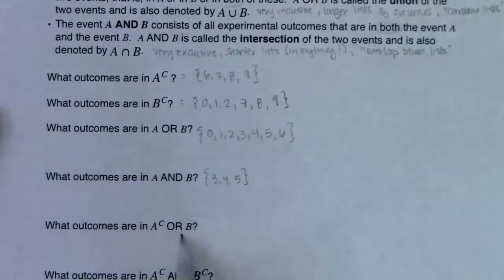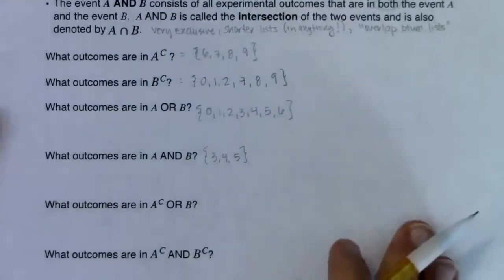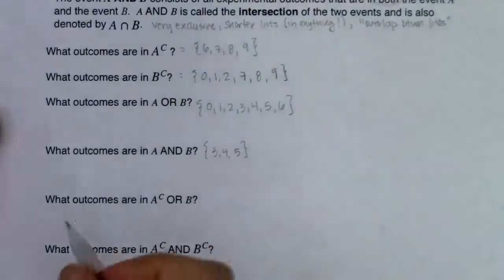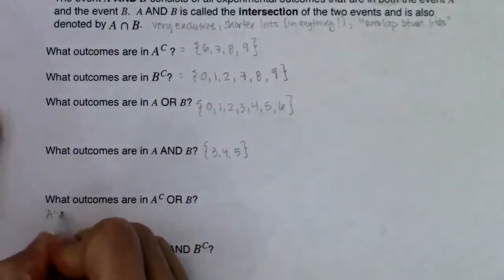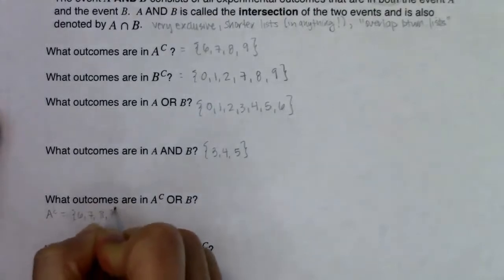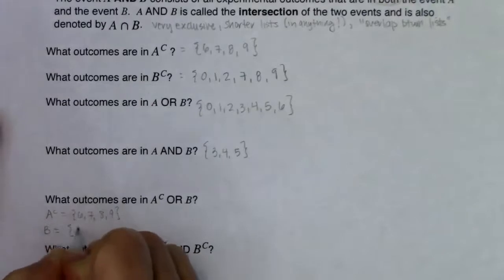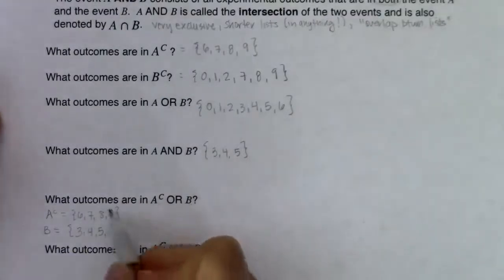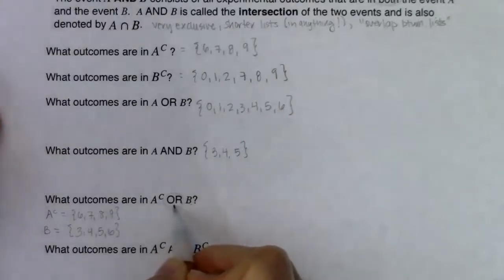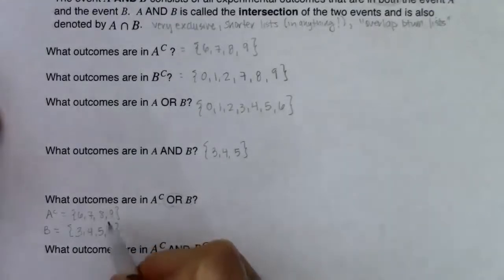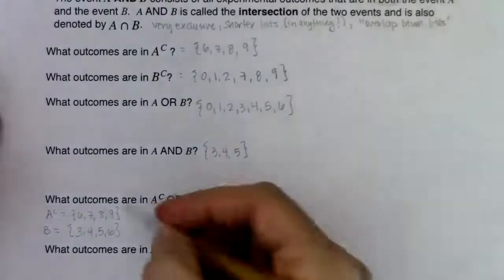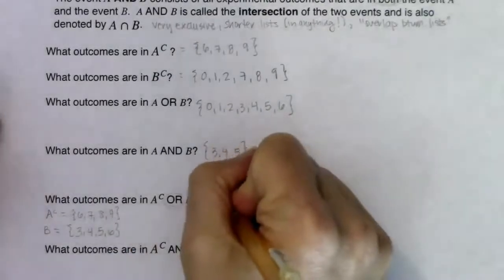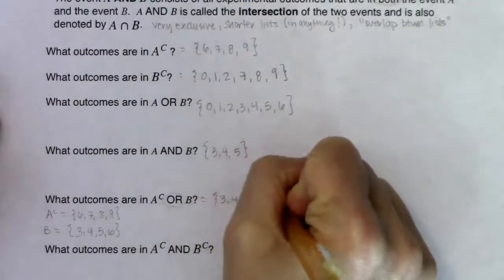Now let's do A complement or B. A complement is {6,7,8,9} and B is {3,4,5,6}. Seeing the word OR, I want to combine these lists. Combining them and ignoring repeats: {3, 4, 5, 6, 7, 8, 9}.